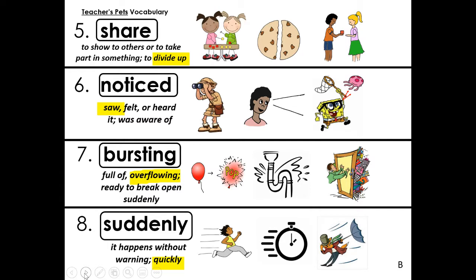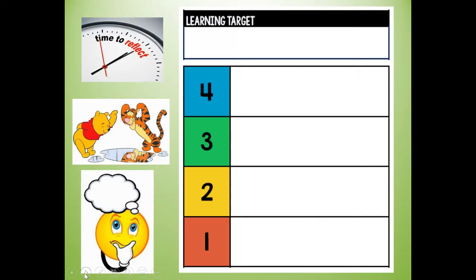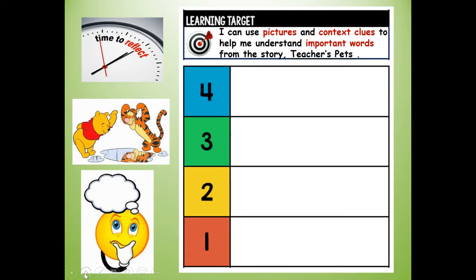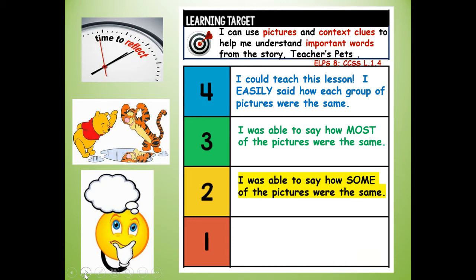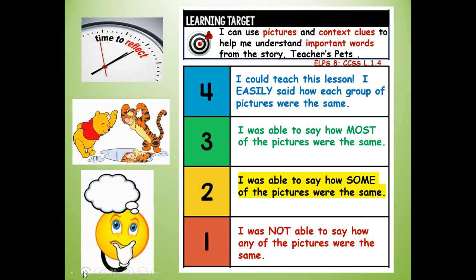Push pause to make sure you have your vocabulary word and synonym for each number, and draw your quick sketch if you want to. At the top of your paper reflect on your learning: how well did you hit our learning target? I can use pictures and context clues to understand important words from Teacher's Pets. Give yourself a four if you could teach the lesson, a three if you said how most pictures were the same, a two if you said how some were the same, or a one if you were not able to say how any were the same. Write your reflection grade at the top.